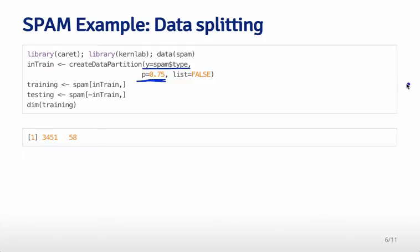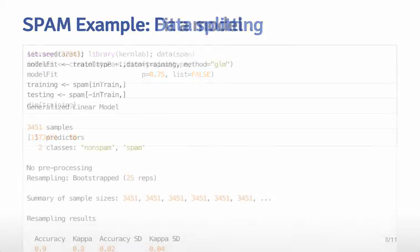Then I can actually subset the data into the training data using the inTrain object that comes out from createDataPartition. I can create the testing dataset by finding all those samples that aren't in the training set. This gives me a subset of the data just for training and a subset just for testing. You can do this with this simple interface.